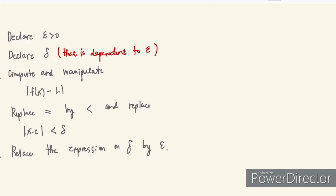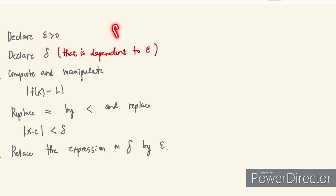Here is the algorithm. Number one: we declare the epsilon. Based on the definition, for every epsilon that is significantly small, there always exists a delta. So once we declare the epsilon, number two: we declare a delta. However, the delta should be dependent on the epsilon, so we leave that blank with respect to epsilon because we haven't determined it yet.